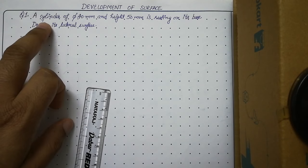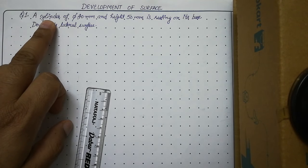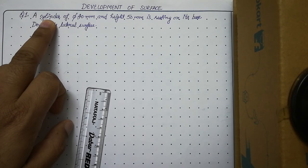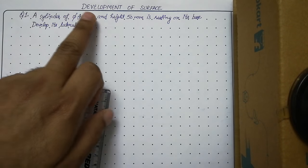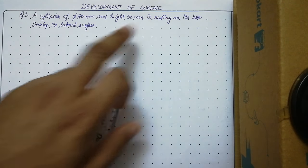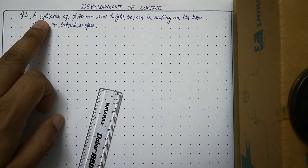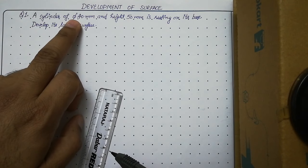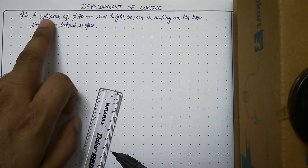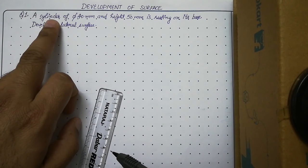First of all we have to draw the front view and top view of the given solid. The given solid is a cylinder, so if you look at a cylinder from the front resting on its base, its front view will be a rectangle and its top view will be a circle. Whenever you are solving any problem related to development of surface, the very first step is to draw front and top views of the given solid.